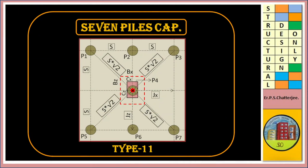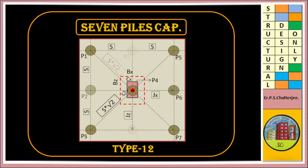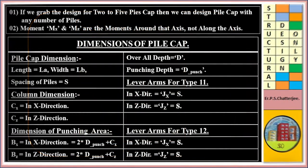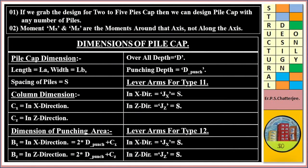This is our 7 pile cap, Type 11, and this is Type 12. If we grab the design of part 2 to 5 pile cap, then we can design pile cap with any number of pile in square array or rectangular array.